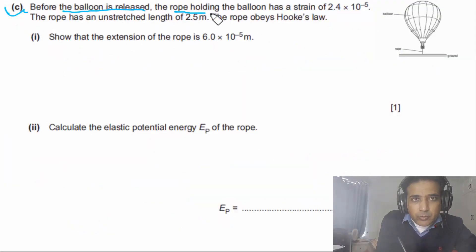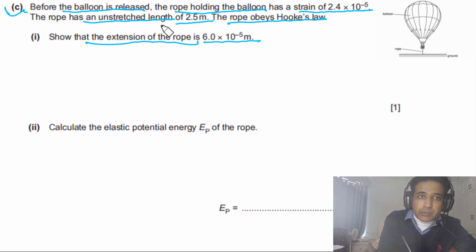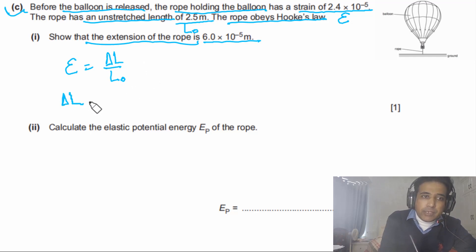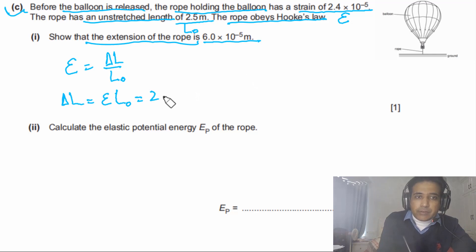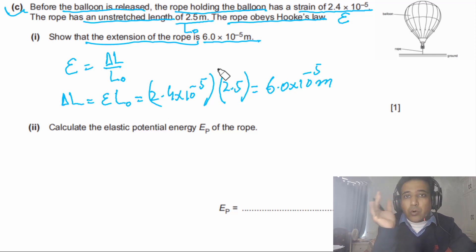Part c: before release, the rope has a strain of 2.4 × 10⁻⁵ and an unstretched length of 2.5 m, obeying Hooke's law. To show the extension: strain = ΔL / L₀, so ΔL = strain × L₀ = 2.4 × 10⁻⁵ × 2.5 = 6.0 × 10⁻⁵ m.